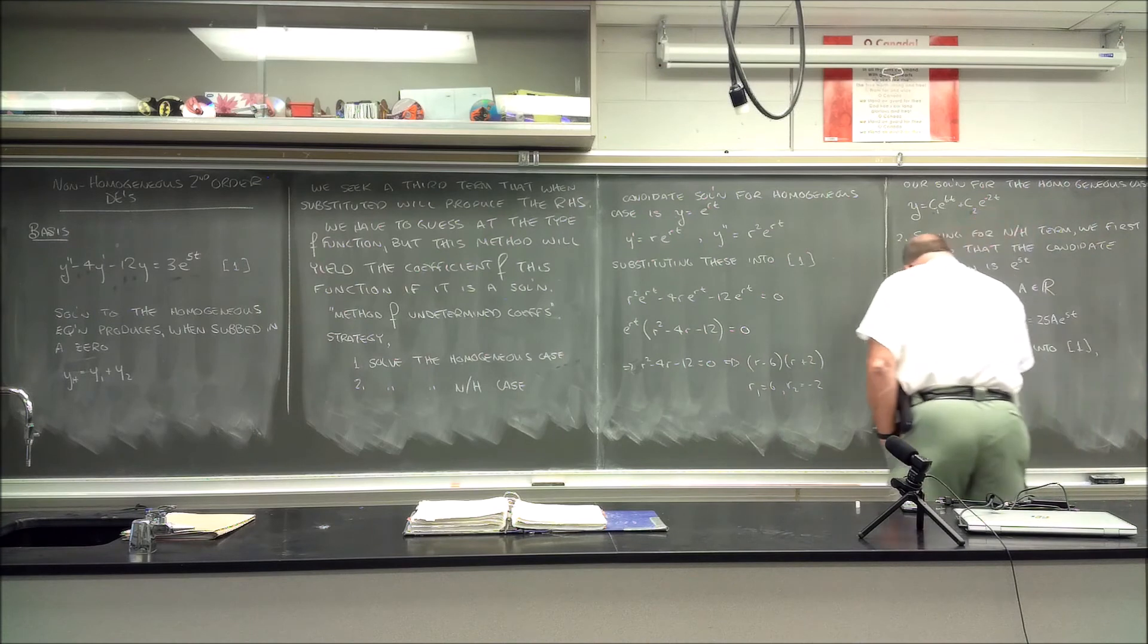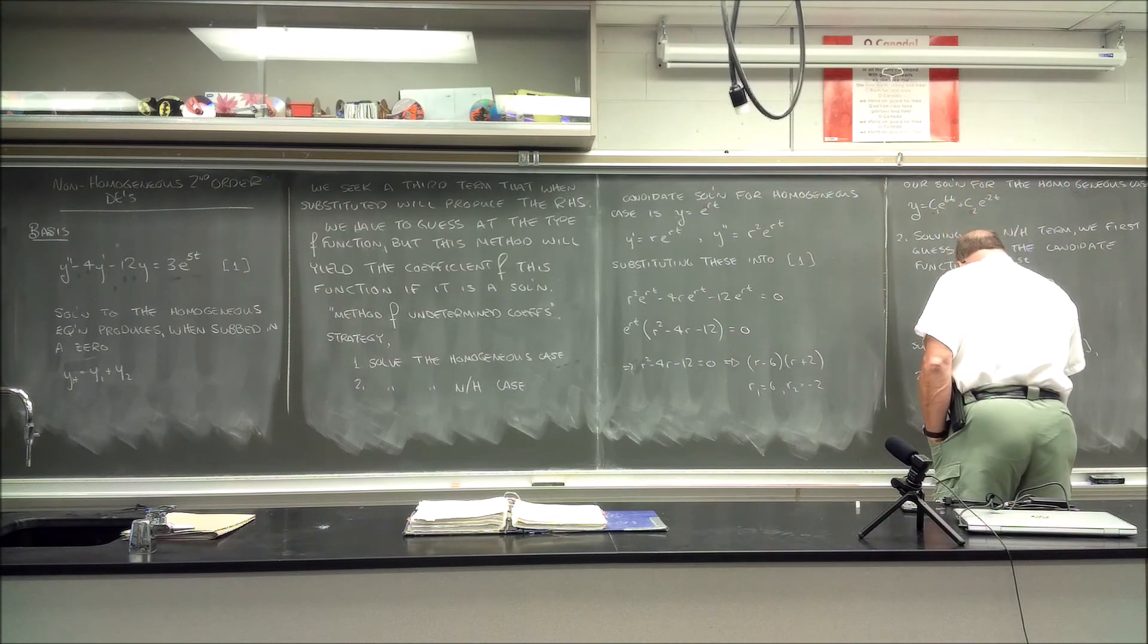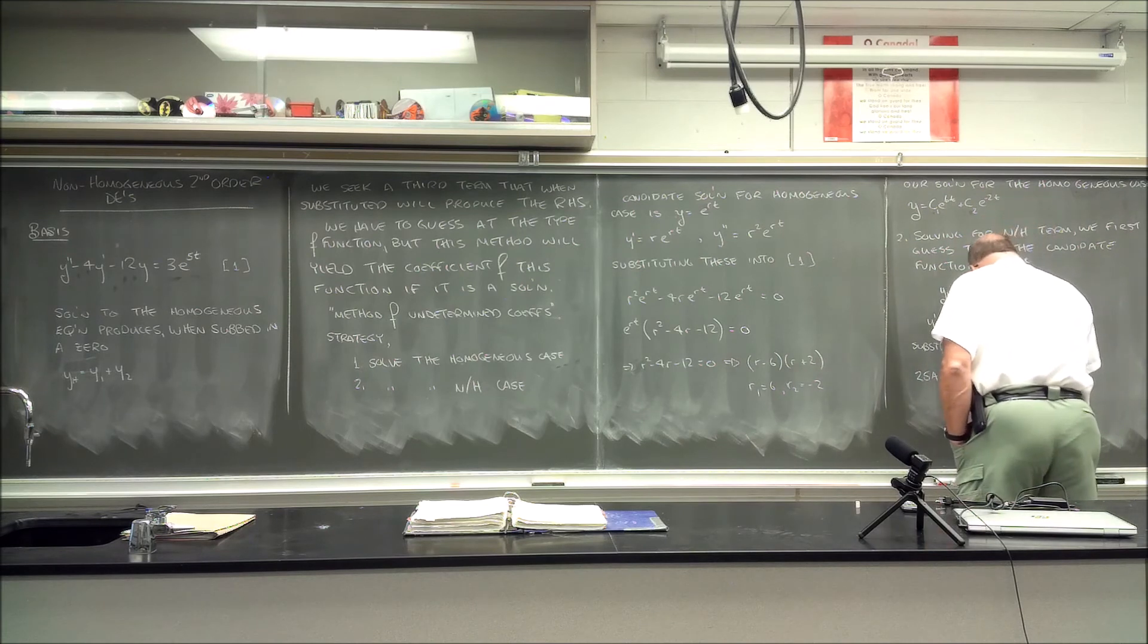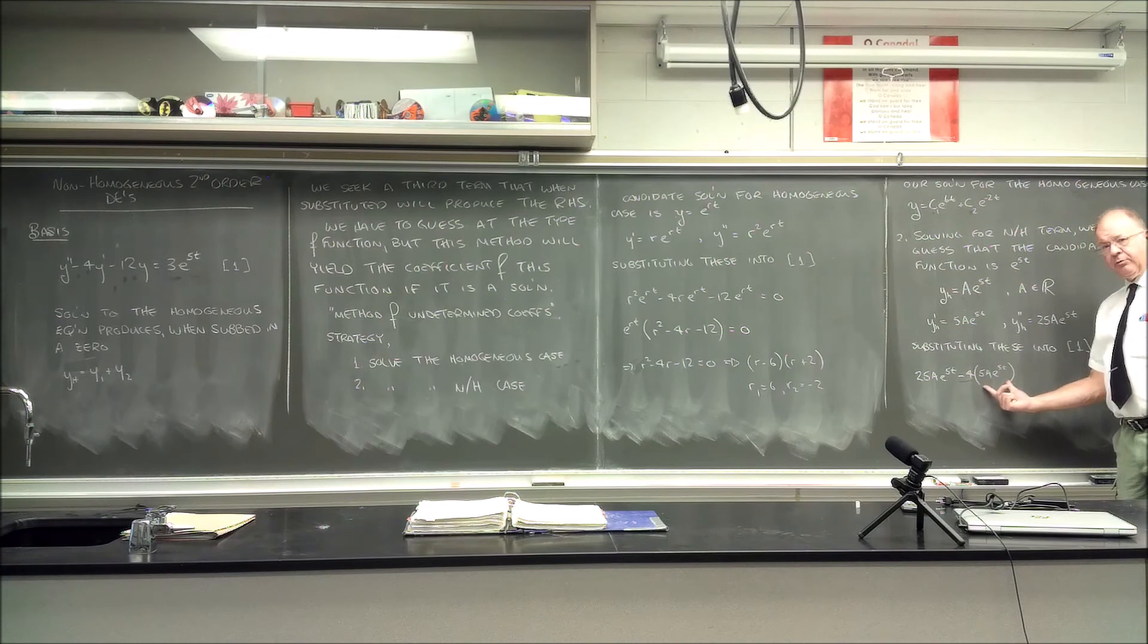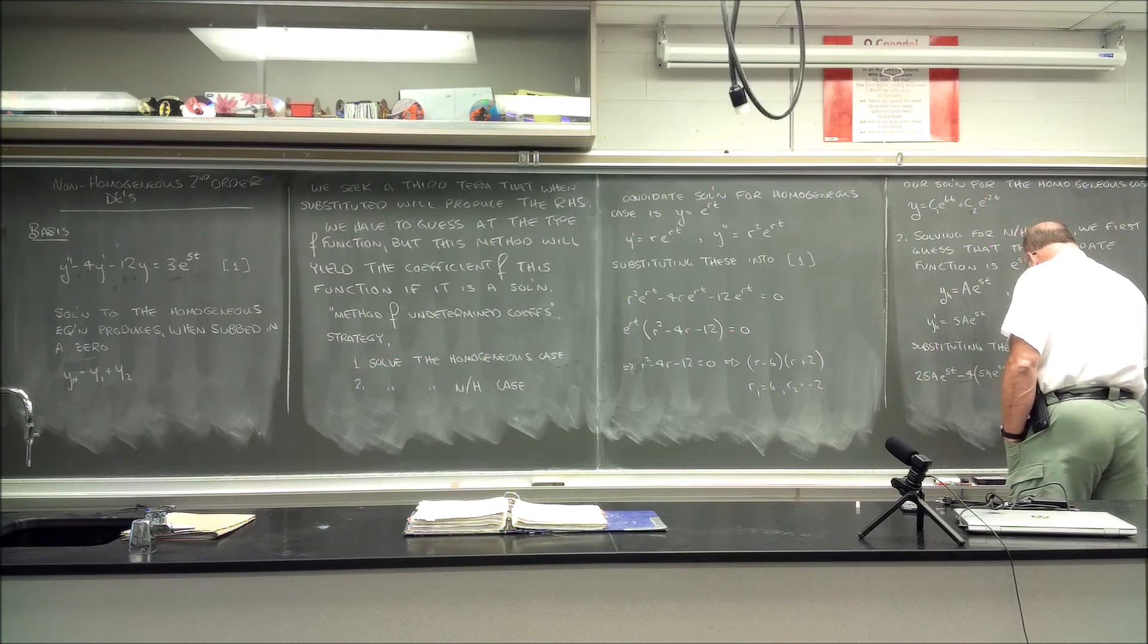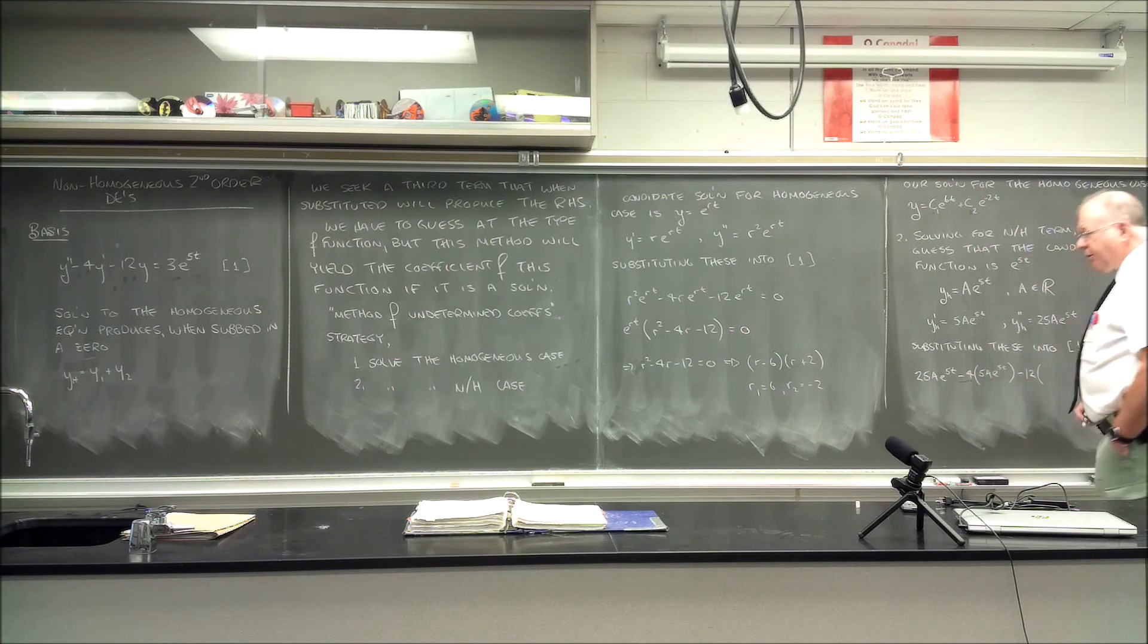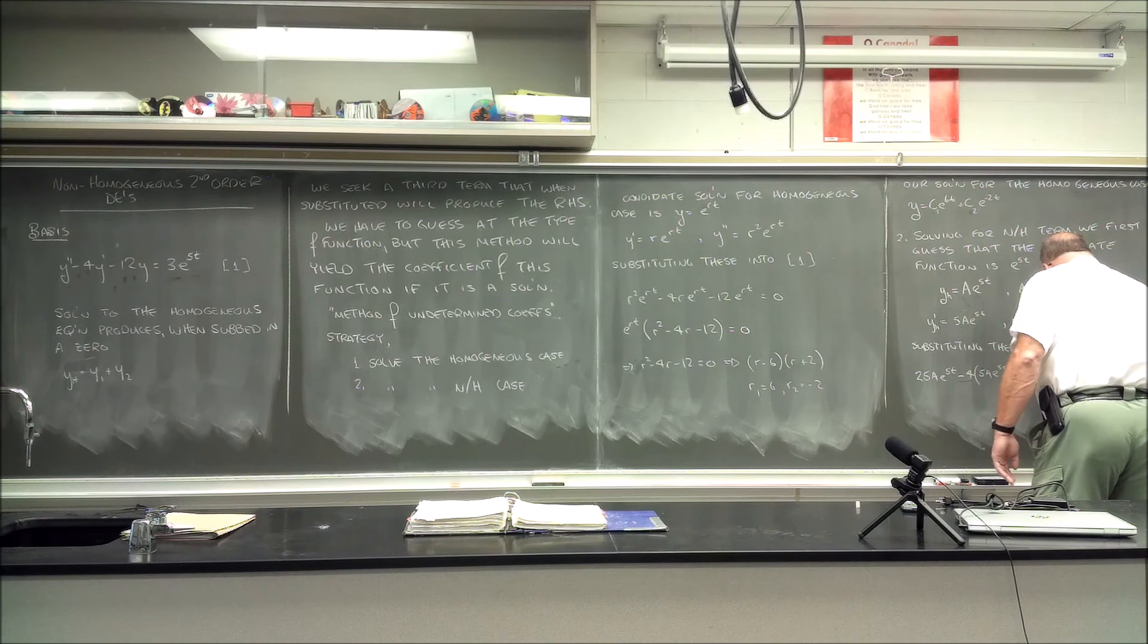So substituting these into equation 1, we're going to get 25a*e^(5t) and then minus 4(5a*e^(5t)). So once again when you substitute things like this in, put the coefficient outside, put a set of parentheses and drop it in. Don't do the arithmetic ahead of time. Be careful please, try to find some disciplined ways so that if we're going to make a mistake let's make it a good one.